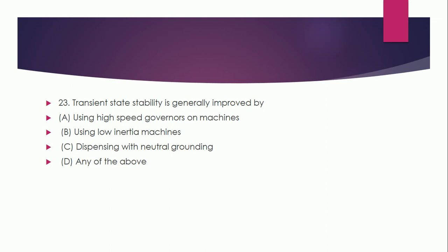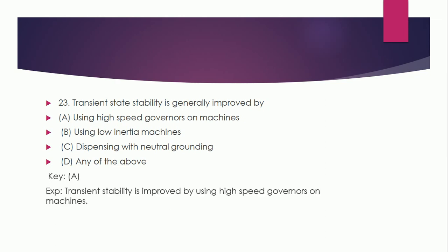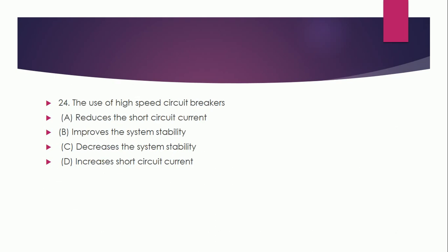Question 23: Transient state stability is generally improved by: A: using high speed governors on machines, B: using low inertia machines, C: dispensing with neutral grounding, D: any of the above. The correct answer is A — using high speed governors on machines. The transient stability is improved by using high speed governors on machines. Question 24: The use of high speed governors: reduces short circuit current, improves system stability, decreases system stability, or increases short circuit current? The correct answer is B — improves system stability, because high speed circuit breakers improve system stability.